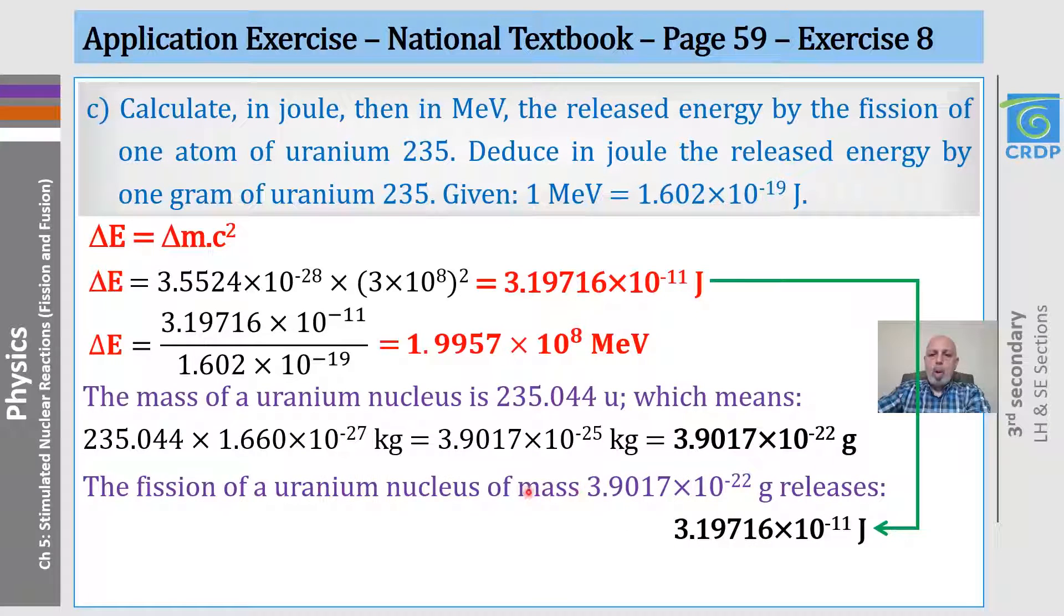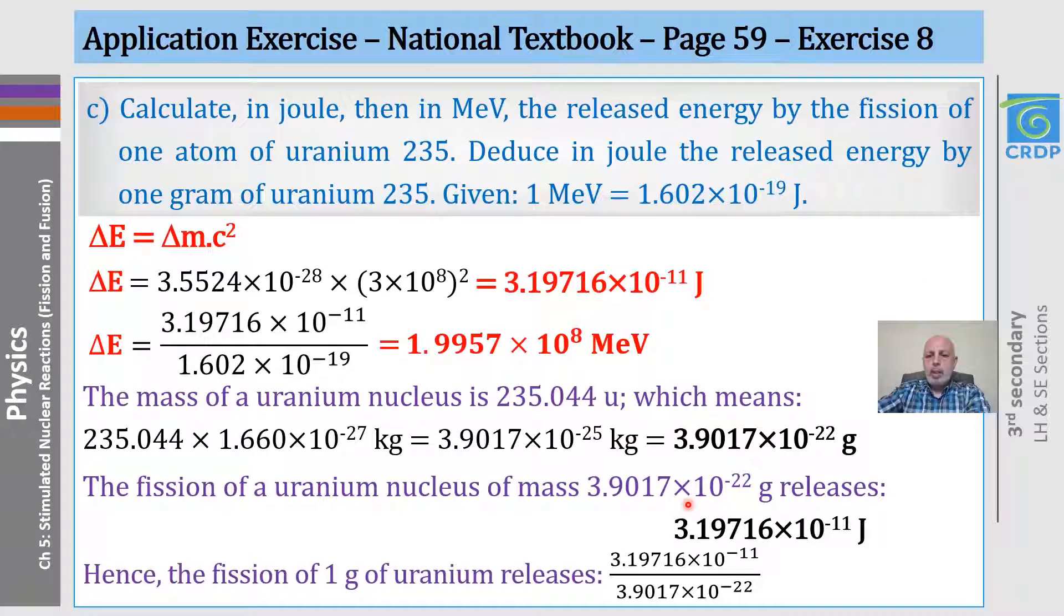Now, I want to remind you that this energy is released by one atom of uranium, and this means by this mass. To be able to find how much is released by one gram of uranium, we just divide it by 3.9 times 10 to the minus 22 grams, and this is what we get.